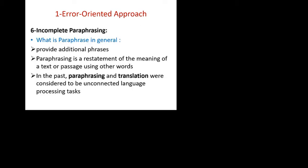Incomplete paraphrasing is another cause of translational error. What is paraphrasing? Paraphrasing is providing additional phrases or words that ease the sentences — it is a restatement of the meaning of a text or passage using other words. In the past, paraphrasing and translation were considered to be unconnected language processing tasks. But the concept of paraphrasing in general is a restatement or rewording with the addition of some phrases, with the purpose of making things clear and understandable for readers.